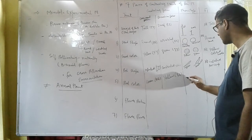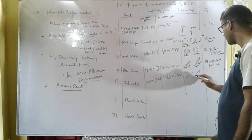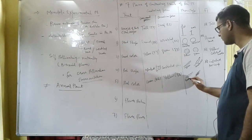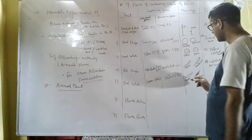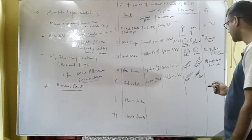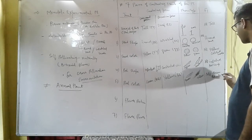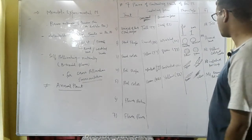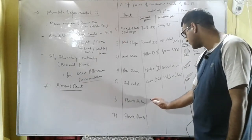The fifth trait is pod color. Pod color can be green or yellow. If two pea plants — one with green pod color and one with yellow pod color — are crossed, in the F1 generation all pea plants have green pod color, because green pod color is the dominant character.